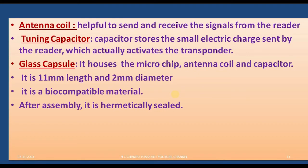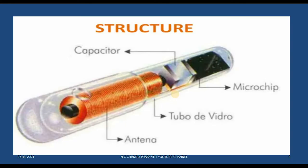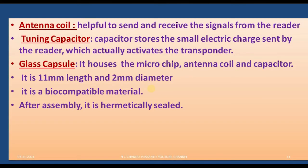The glass capsule holds all the different components — the microchip, antenna coil, and capacitor. It is 11 millimeters in length and 2 millimeters in diameter. It is made of biocompatible material, and after assembly it is hermetically sealed — an airtight glass capsule.